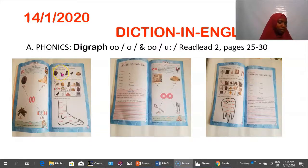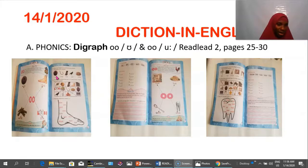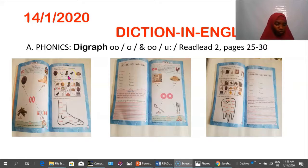Page 26 has activities where pupils circle the OO diagraph in the following objects. Guide the children through, as they must treat this page in class immediately after the lesson. An example has been done for them — the OO will be circled in each word example. Take your time to pronounce the words: wool, hook, hoof.